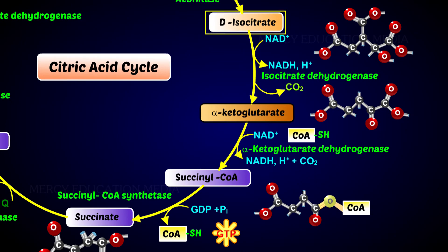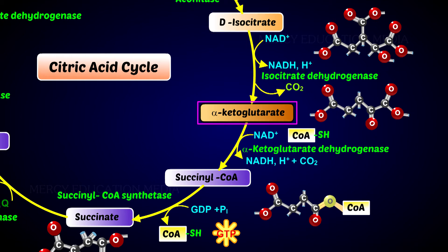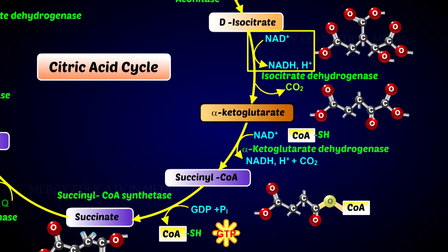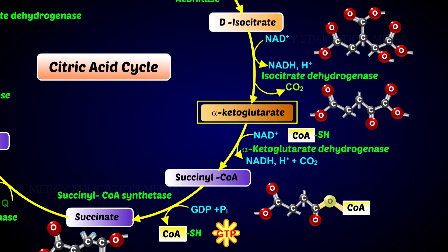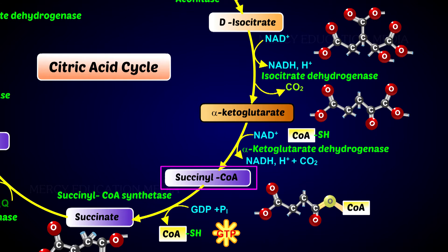The isocitric acid is oxidatively decarboxylated to alpha-ketoglutaric acid. This reaction is catalyzed by isocitric dehydrogenase. During this reaction, one NADH2 is formed.